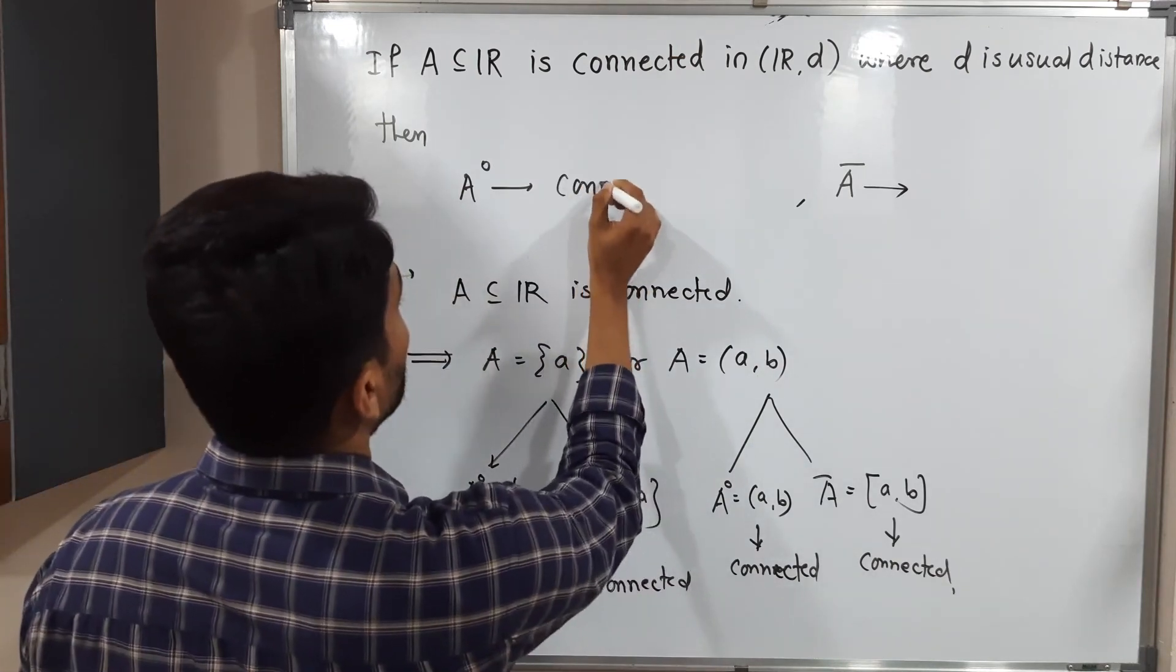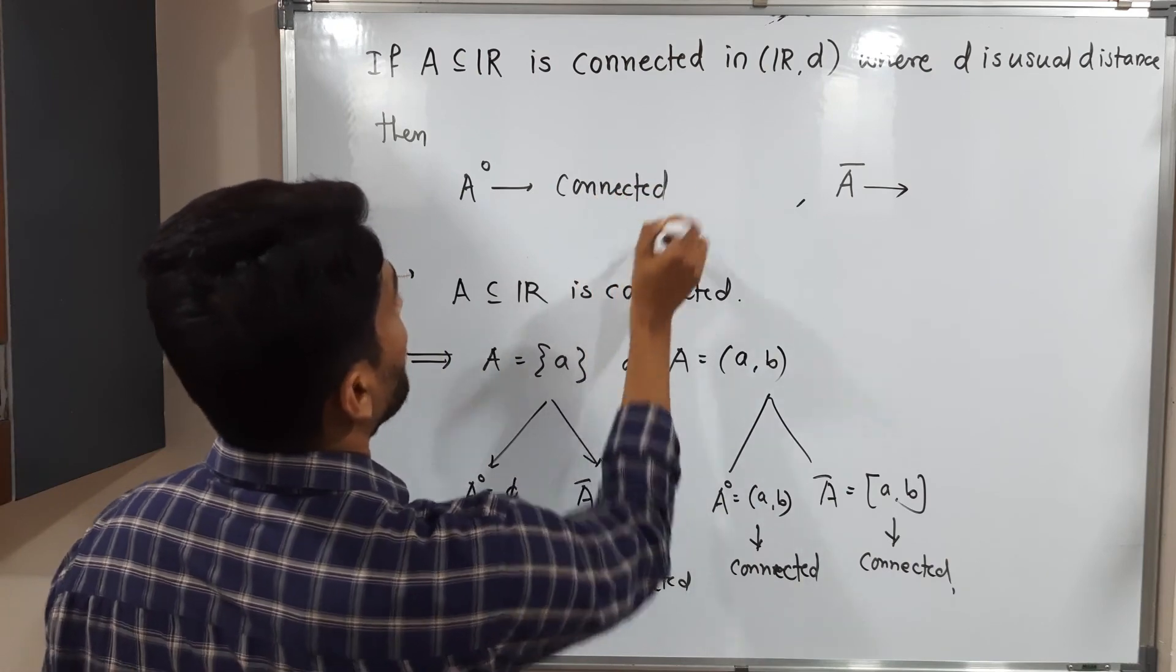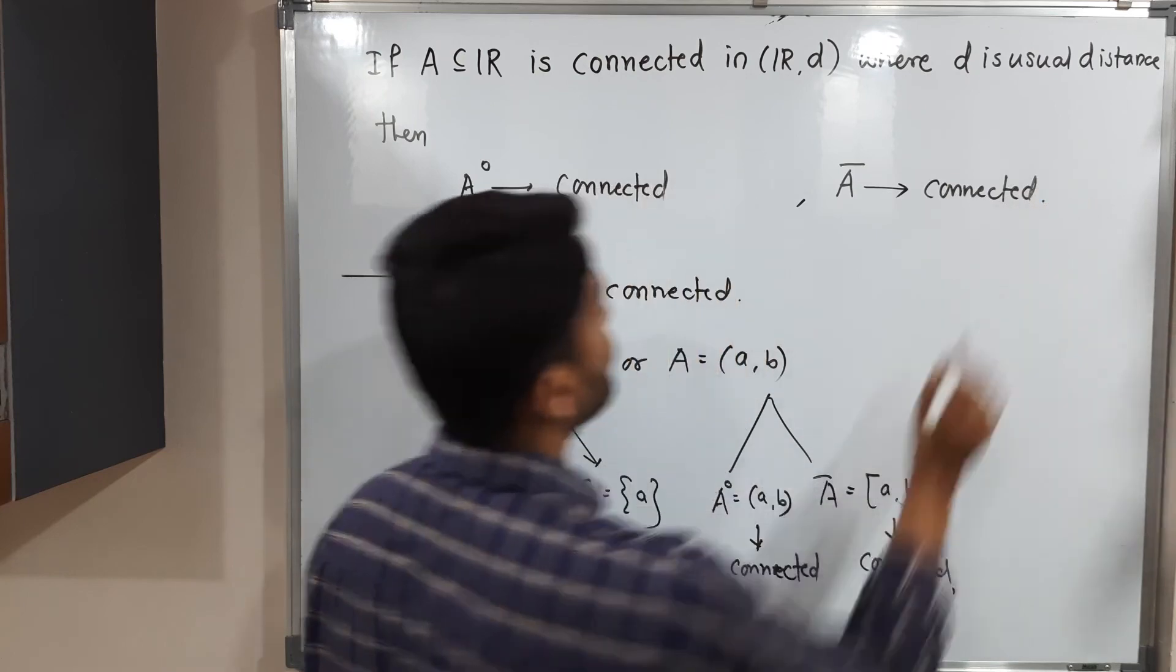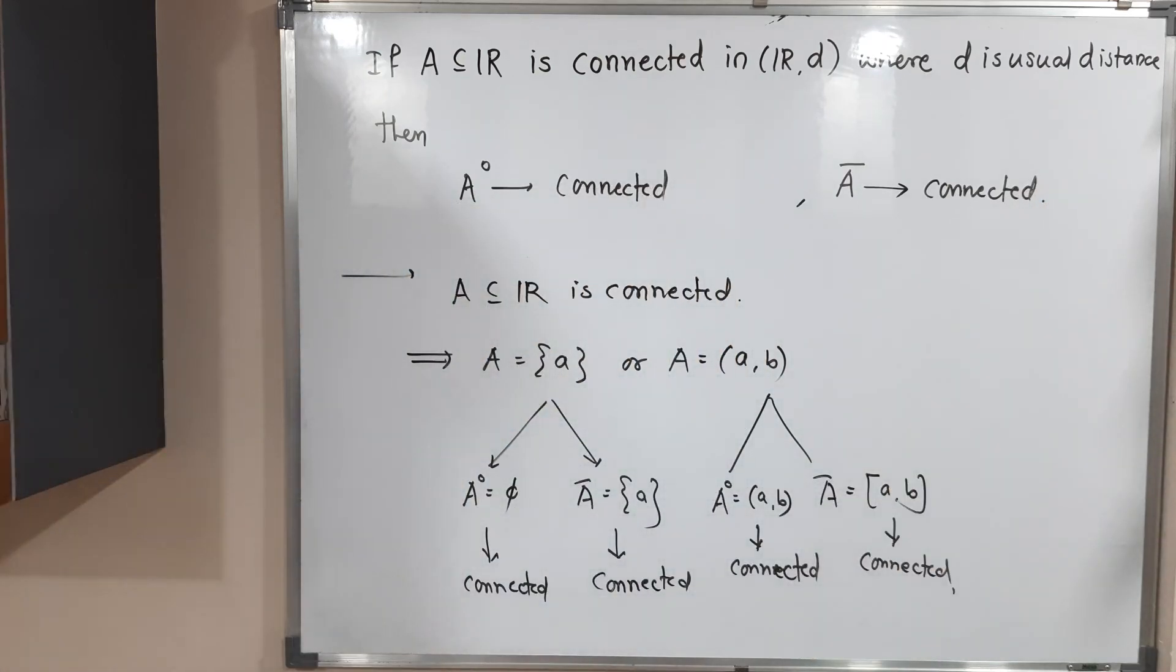So that's why A° is connected - this is our conclusion - and A̅ is connected. So this is our conclusion. You can make a screenshot of it and then we will stop.